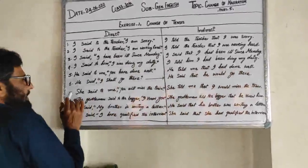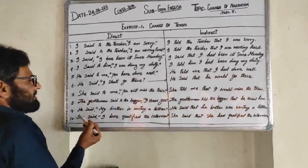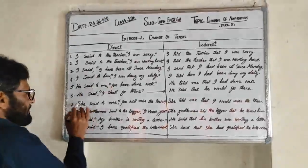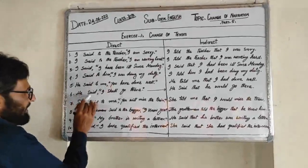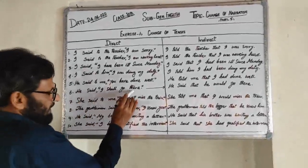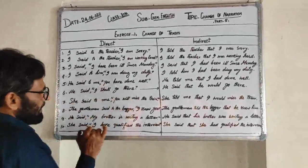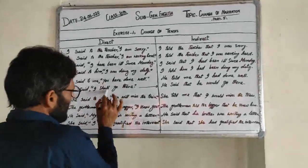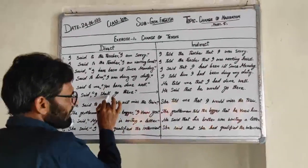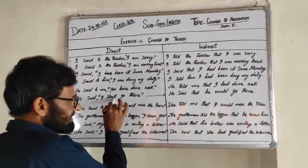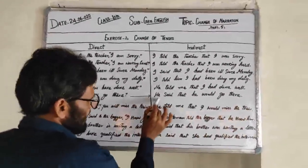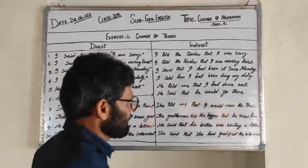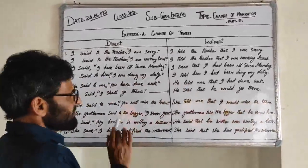Sentence 6: He said I shall go there. Here 'shall' is future tense. In indirect speech: He said that he would go there. As we learned, 'shall' or 'will' changes to 'would' in indirect speech.